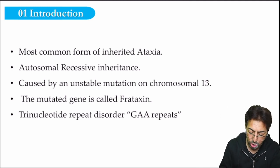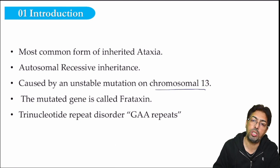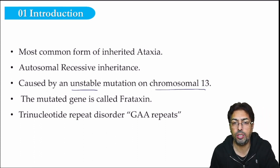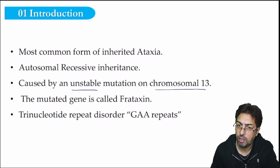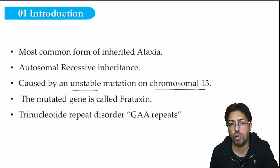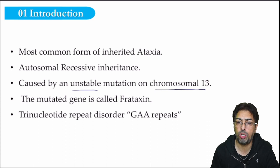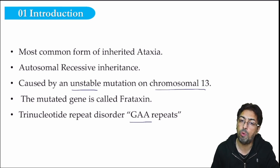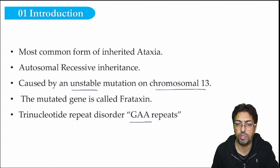An important point to remember is chromosome 13 — the unlucky chromosome — which is implicated in the pathogenesis of Friedreich's ataxia. There may be unstable mutations in chromosome 13 resulting in this disease. Friedreich's ataxia belongs to the group of trinucleotide repeat disorders, in which there is repetition of a trinucleotide pattern. The trinucleotides repeated are GAA sequences, and the more the repetition, the more severe the disease.